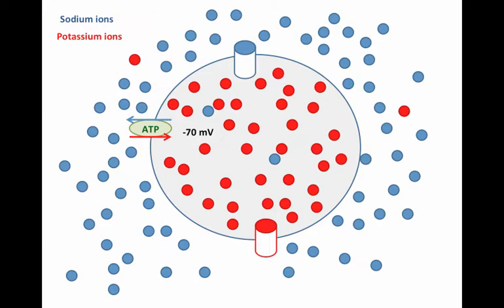Now what would happen if we open a potassium channel? If you predicted that potassium would leave the cell following its concentration gradient, you would be exactly right.